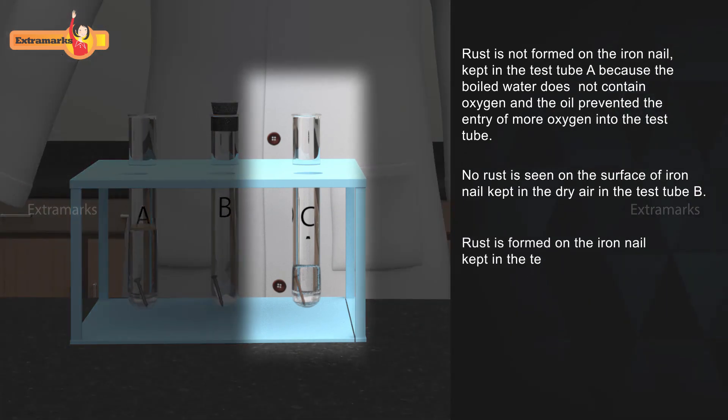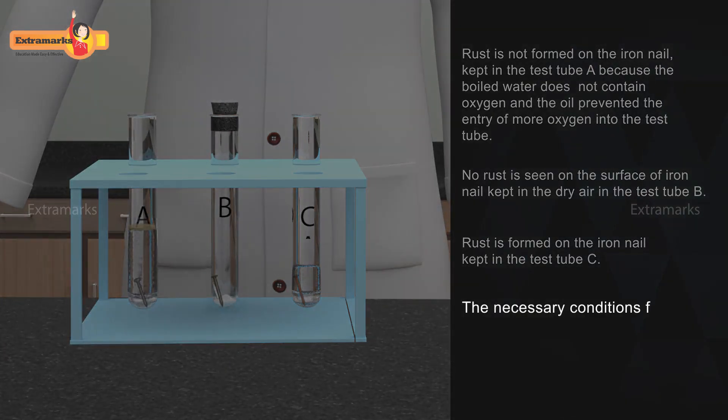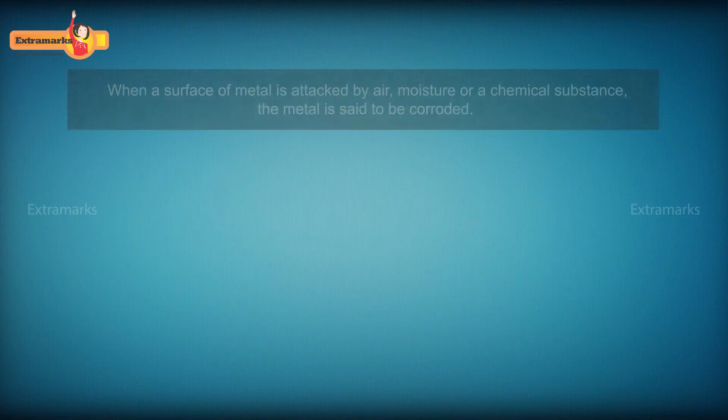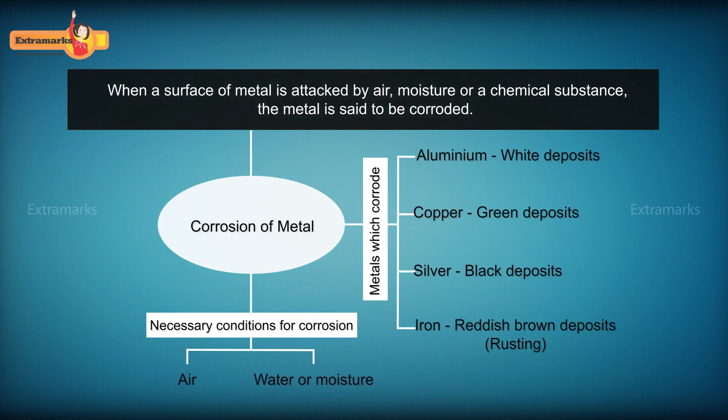Rust is formed on the iron nail kept in test tube C because it is exposed to both air and water. From this experiment, we can conclude that the presence of air and water is a must for rusting of iron. Now, let us summarize what we have learnt about corrosion.